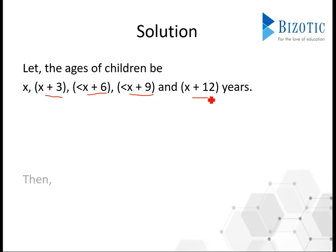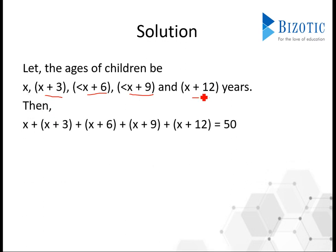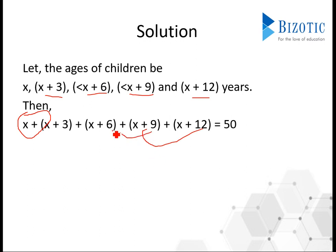Now the sum of the ages of all 5 children is given as 50. What you need to do is calculate the age of the youngest child, which is x. In order to calculate that, you just have to add everything: 12 plus 9 is 21, 21 plus 9 is 27 plus 3, which is 30. So that will give you 30 plus 5x is equal to 50.